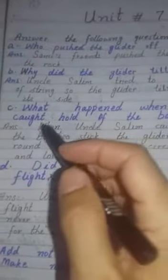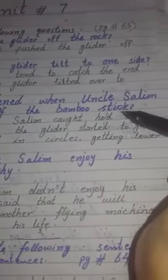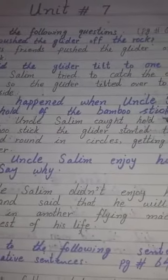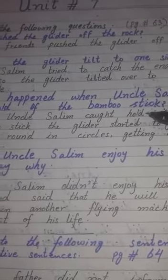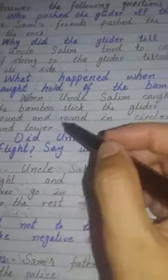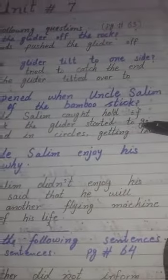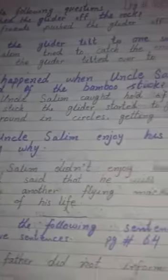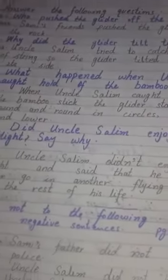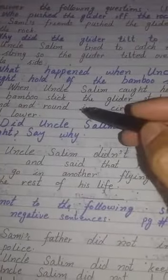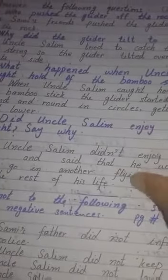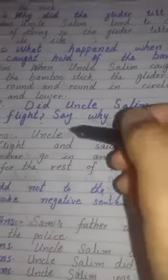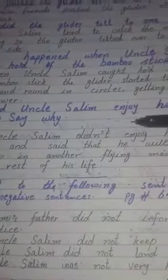Number C: What happened when Uncle Salim caught hold of the bamboo stick? Kya hua jab Uncle Salim ne bamboo stick ko pakarne ki koshish ki? Answer hai: When Uncle Salim caught hold of the bamboo stick, the glider started to go round and round in circles, getting lower and lower. Uncle Salim ne jab bamboo stick pakdi to glider ne circles mein gol gol ghoomna shuru kar diya aur neeche se neeche hota chala gaya.